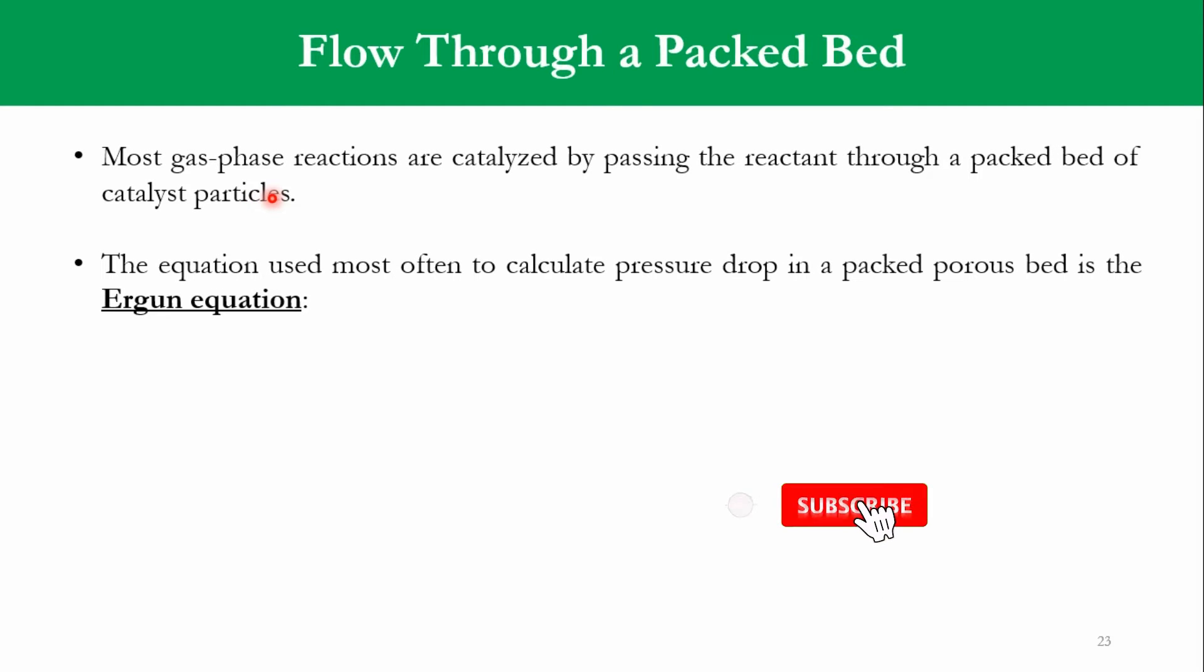Talking about flow through the packed bed reactors, most gas phase reactions are catalyzed by passing the reactor through a packed bed of catalyst particles. Usually packed bed reactors are mostly used for reactions like ammonia production or MCHD hydrogenation to produce hydrogen and toluene with platinum type catalyst. There are some catalysts involved in the system.